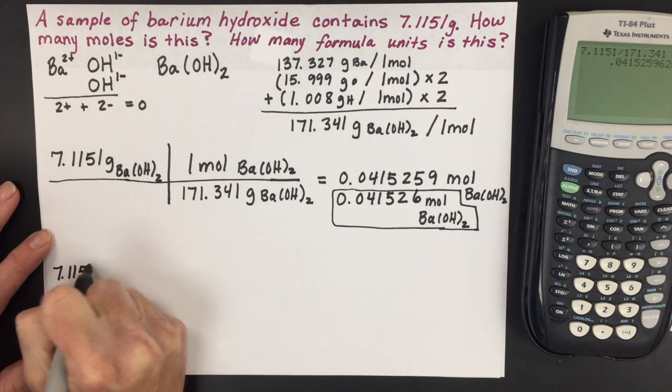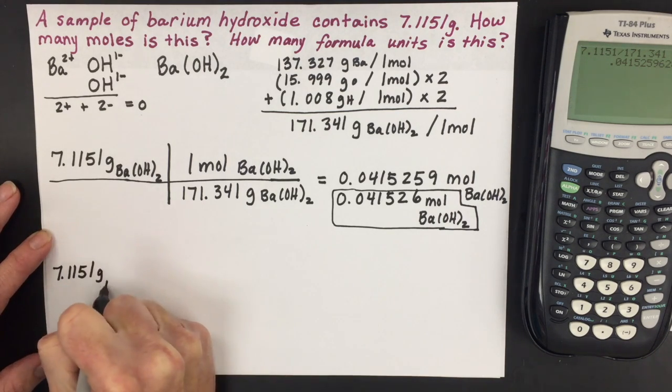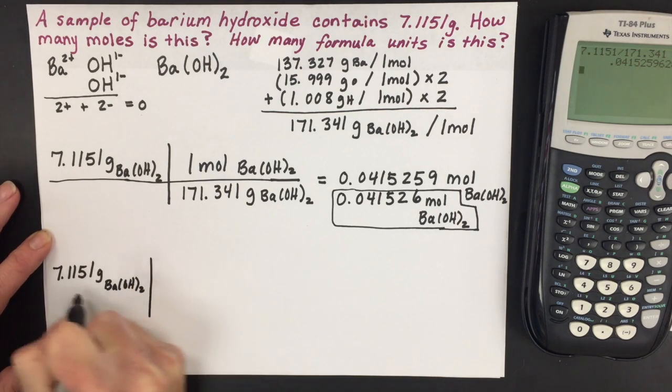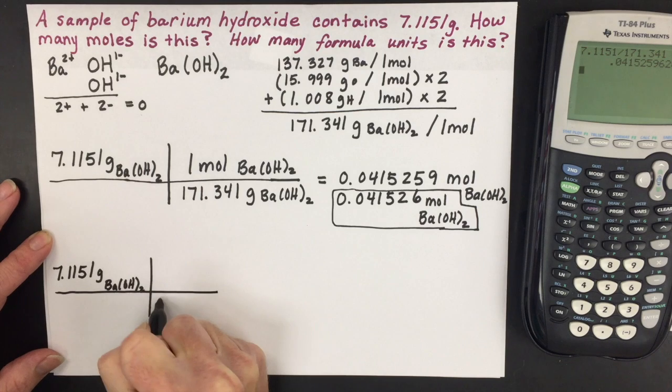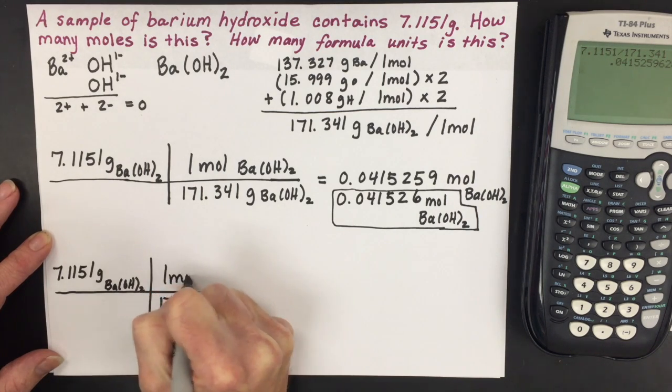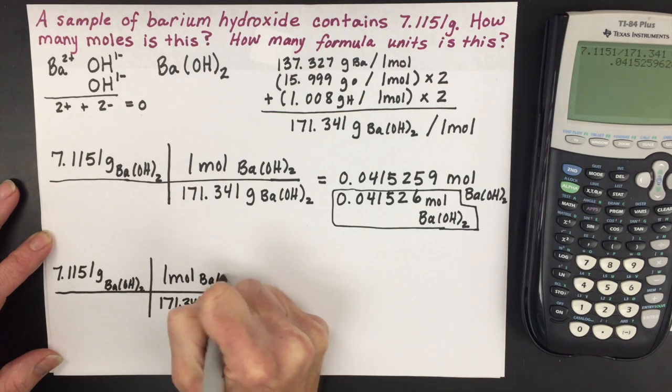This first part is going to look the same. You're going to convert that to moles, so 171.341 grams for every one mole of barium hydroxide.